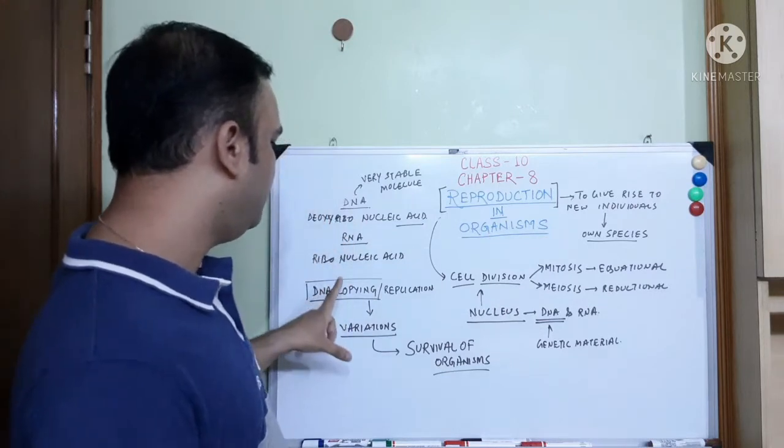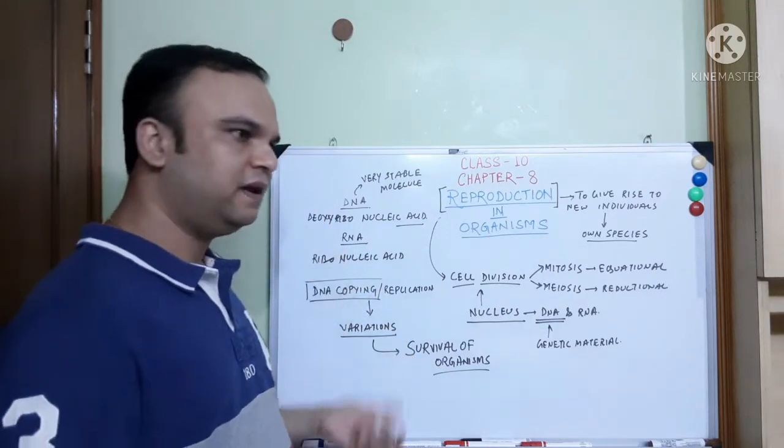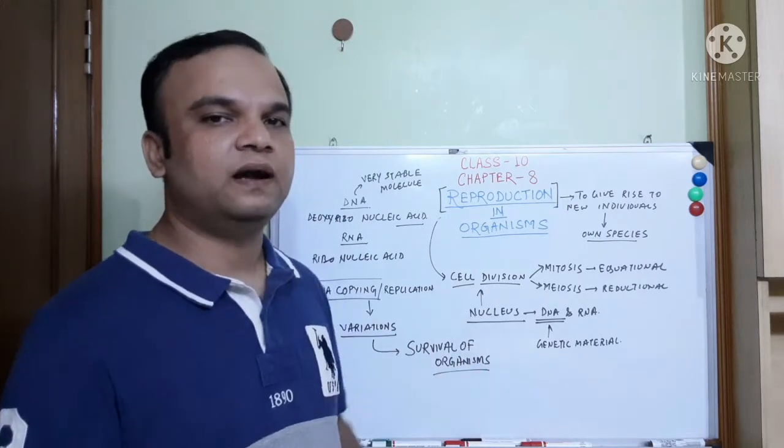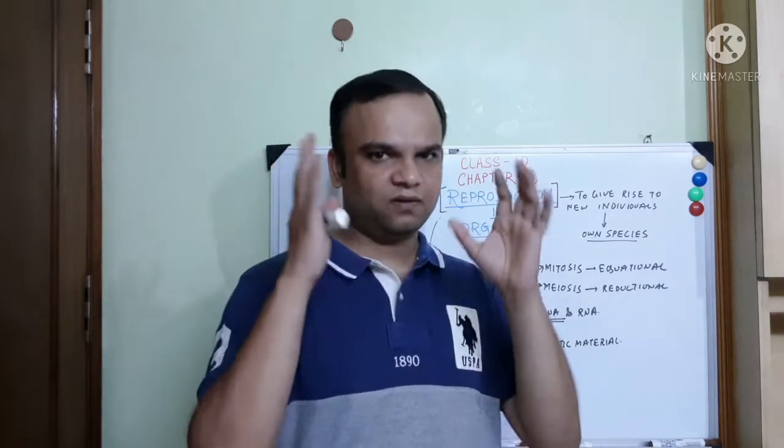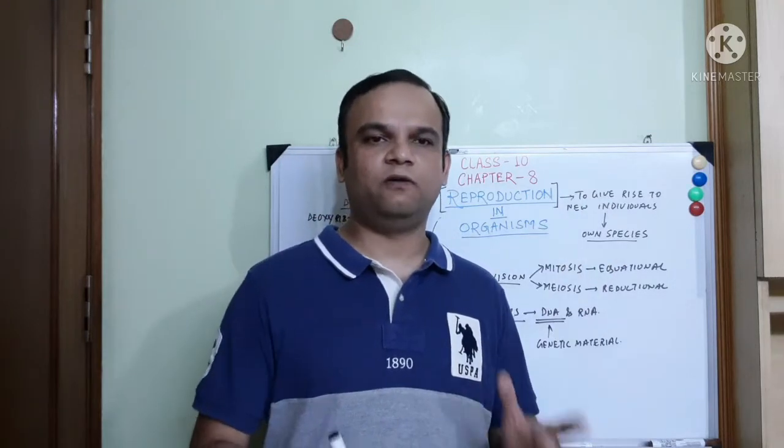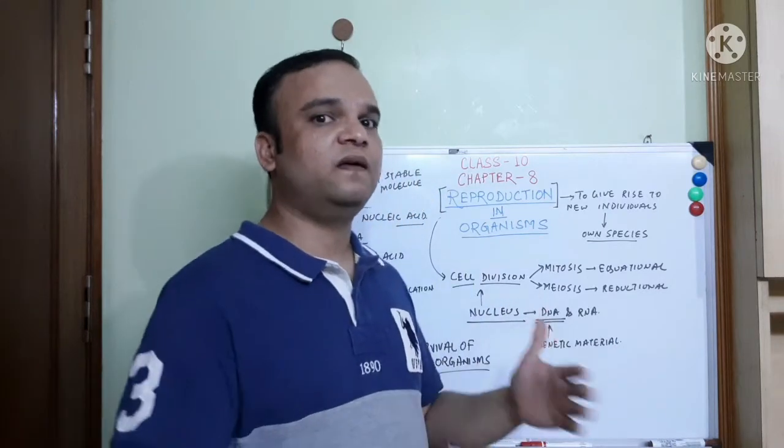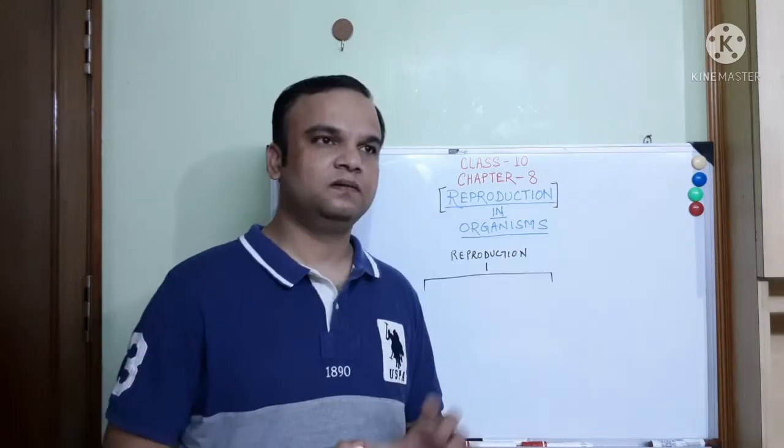These varieties of organisms that make up this living world, this earth, we call this a biosphere or biodiversity. This biodiversity's major reason is reproduction, which is carried out through cell division. Cell division's basis is the nucleus, and nucleus contains the genetic material which undergoes replication. Because of replication, sometimes variations creep in, and those variations are important for the survival of organisms.